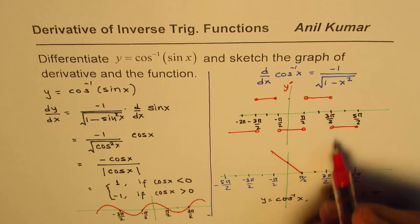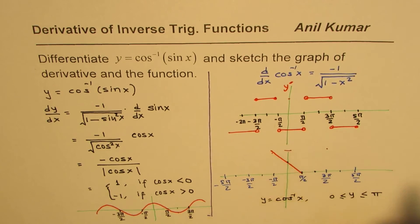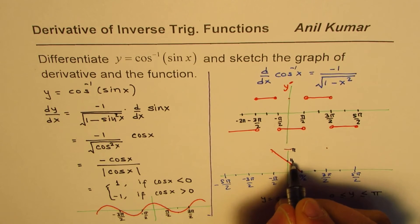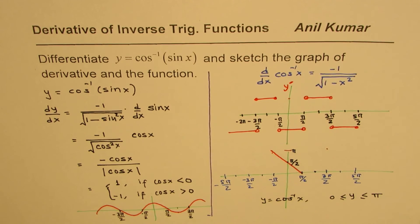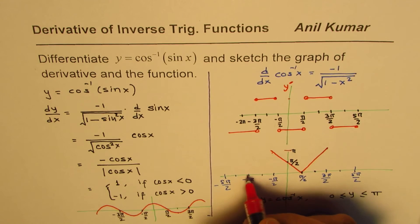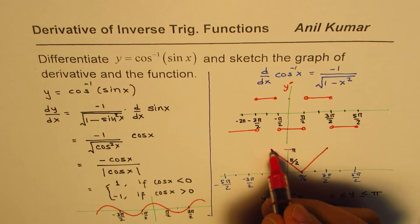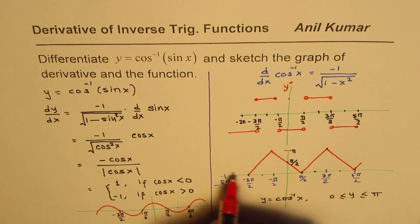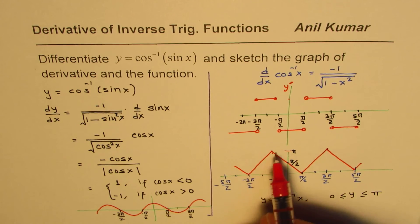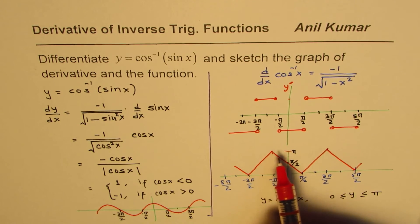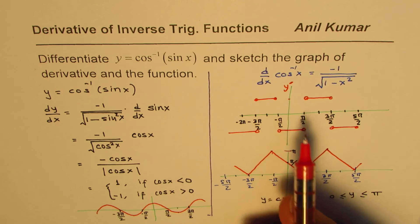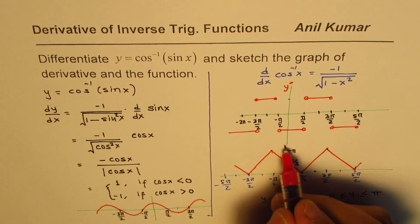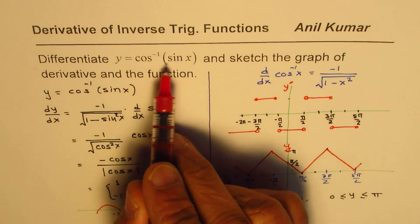The graph falls down until pi/2, then rises up to a maximum value of pi. At 0 it is pi/2. Then again it falls and rises, with slope negative 1 when falling and positive 1 when rising. This gives you the complete graph of the function y equals cos inverse of sine x, which is a piecewise linear zigzag pattern oscillating between 0 and pi.